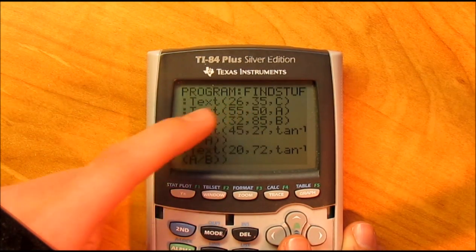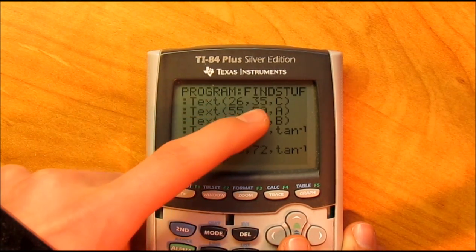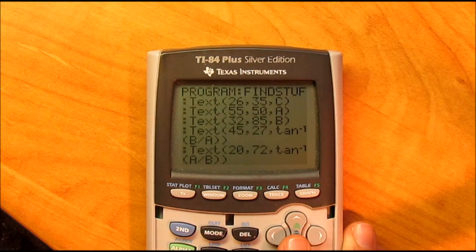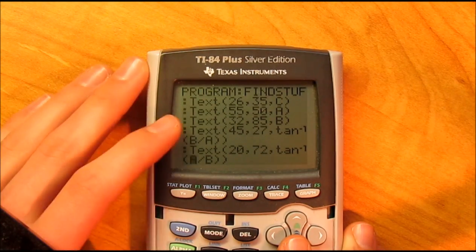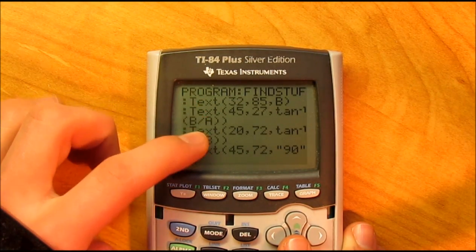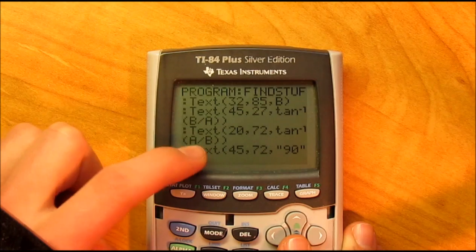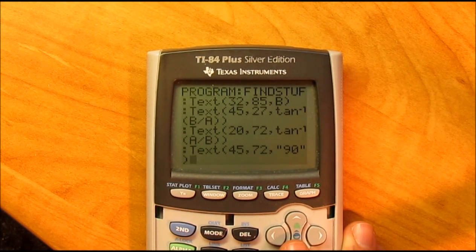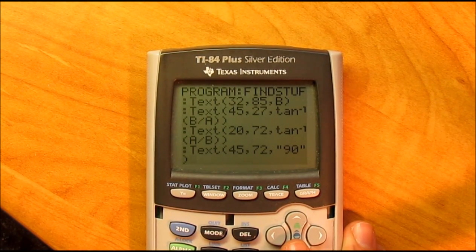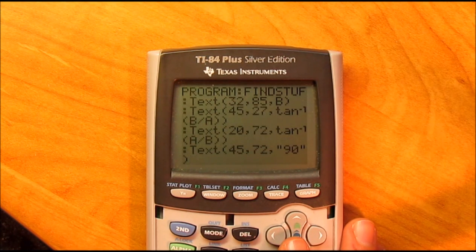This is displaying the three sides of the triangle. And these three texts here, here, and here are for the angles in the triangles.